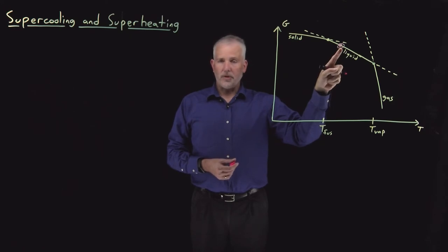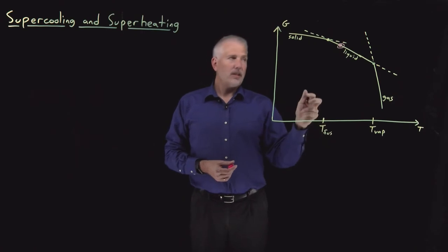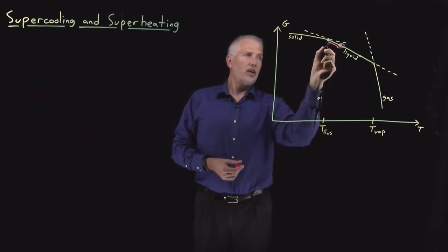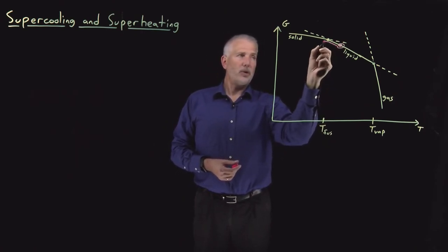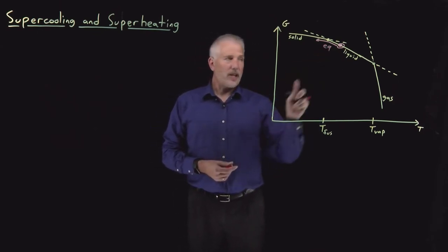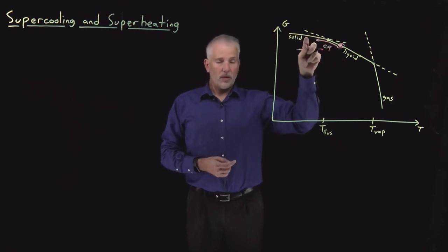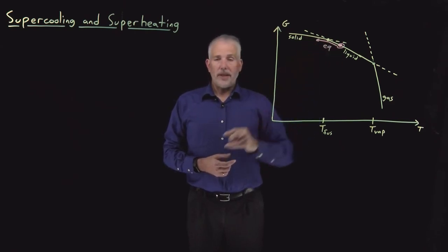If I start lowering the temperature from room temperature down towards and then across the freezing point, when I get to the freezing point, the water will convert to solid. The water will freeze. That's what happens if I'm in equilibrium, if I do that process slowly enough to remain in equilibrium.